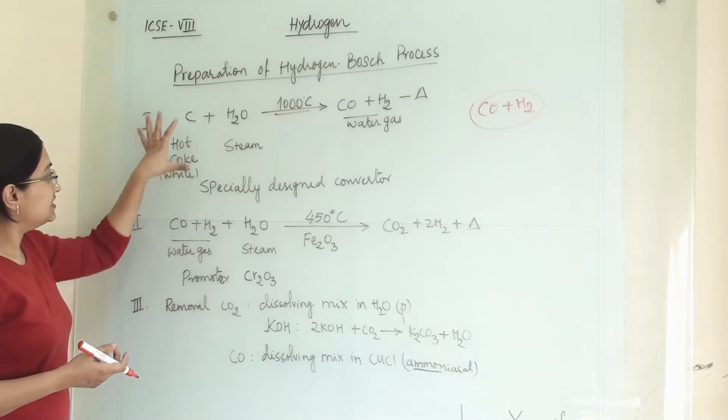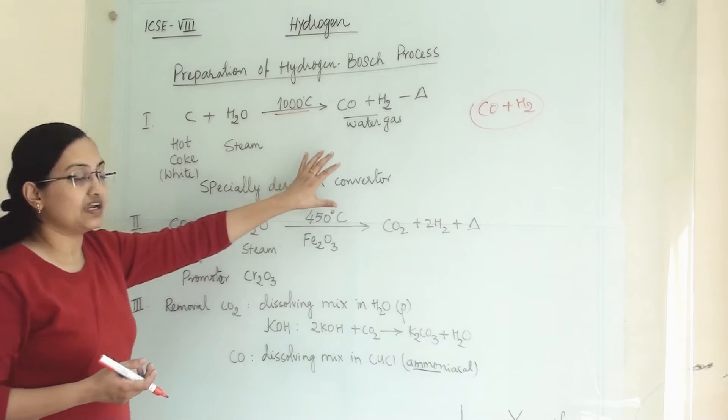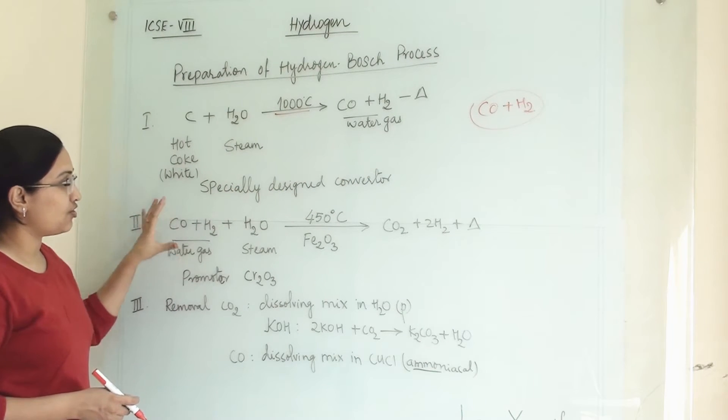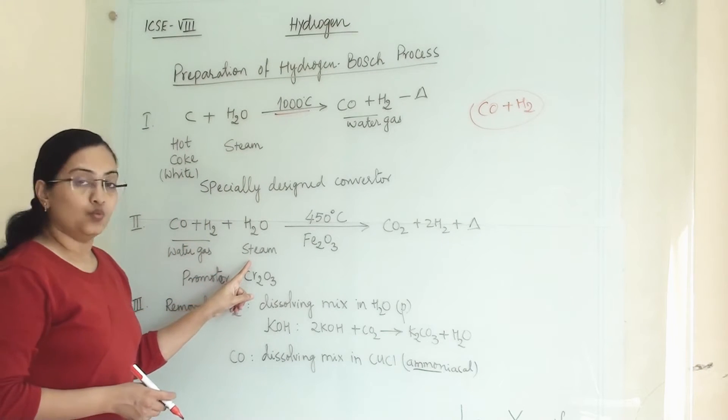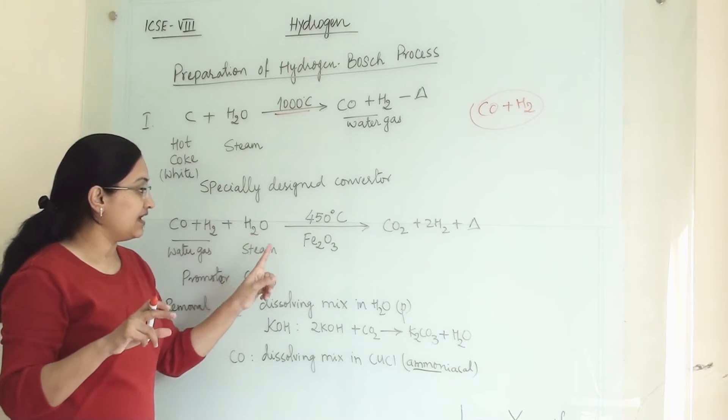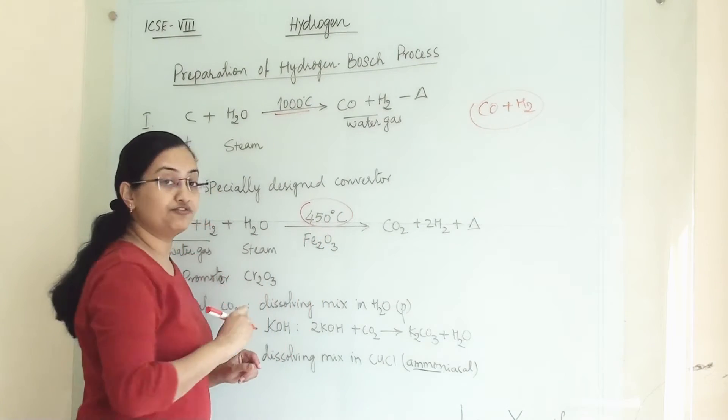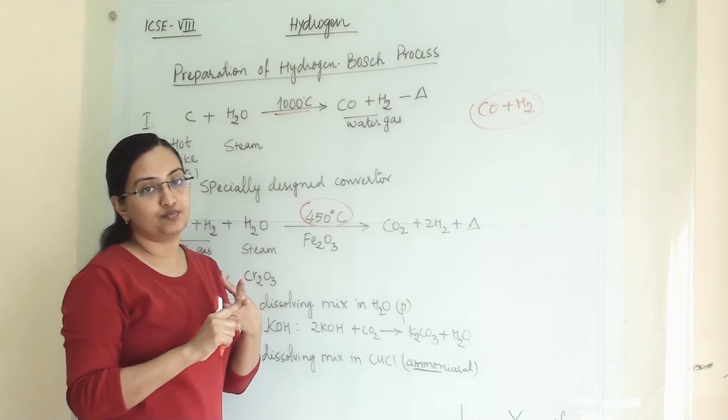Now this step we are doing in a specially designed converter. In the second step, water gas, that is a mixture of carbon monoxide and hydrogen, again we are passing on steam and this reaction will happen at 450 degree Celsius with the help of one catalyst and one promoter.